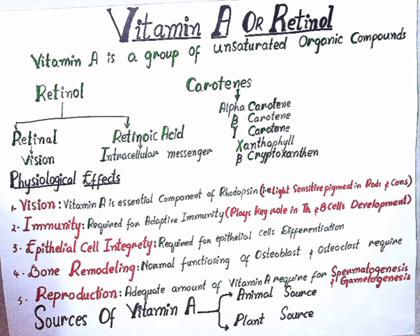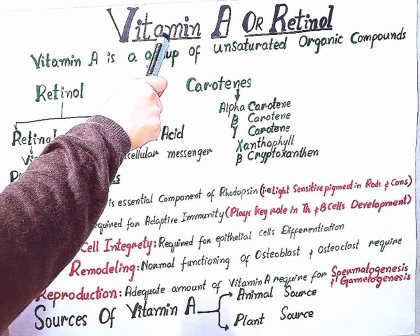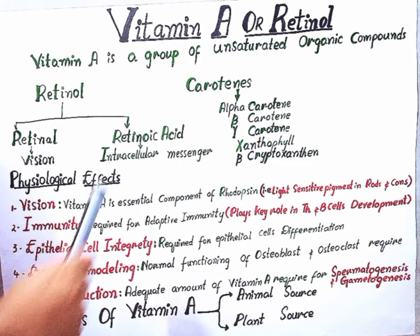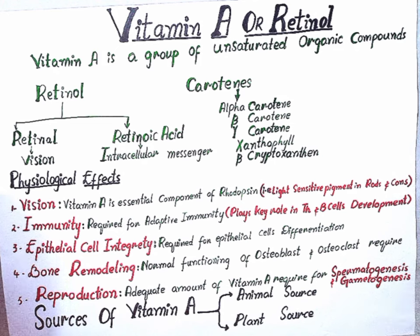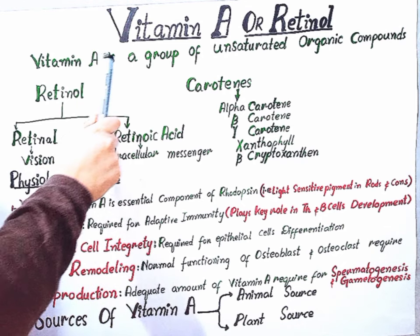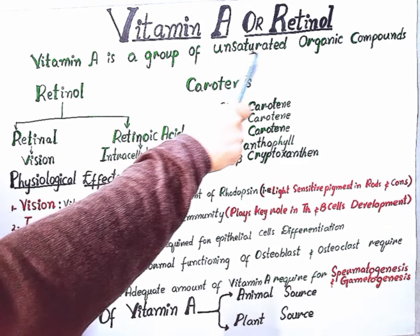Hello everyone, welcome back to Learn Science with Me. Today we have our first fat-soluble vitamin, which is Vitamin A. Vitamin A is usually called retinol, and in our body it plays a very important role — it is important in building a better immune system, better cellular mechanisms, as well as for our vision and eyesight.